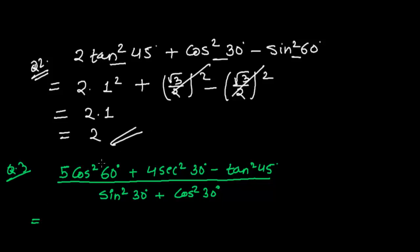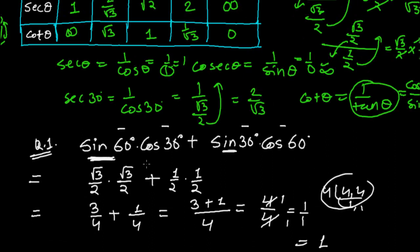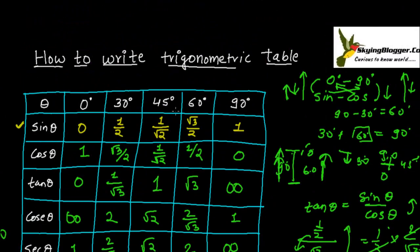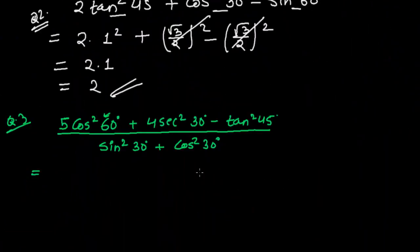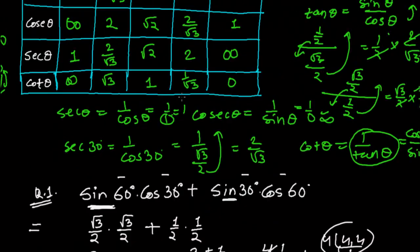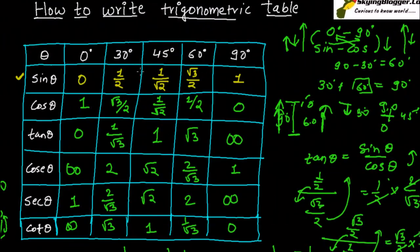First, I have to find out the value of cos 60. I think you know the table, but let me do this from the table. The value of cos 60 is 1/2. Now let me find the value of sec 30, which is 2 upon root 3.